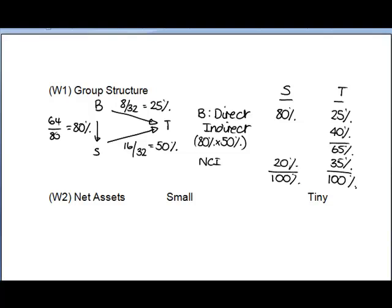Setting up that group structure is absolutely essential. Even though there may not be marks directly allocated to it, if we get those relationships wrong we've got a big problem. Working through the question line by line — we know that both Small and Tiny are subsidiaries.